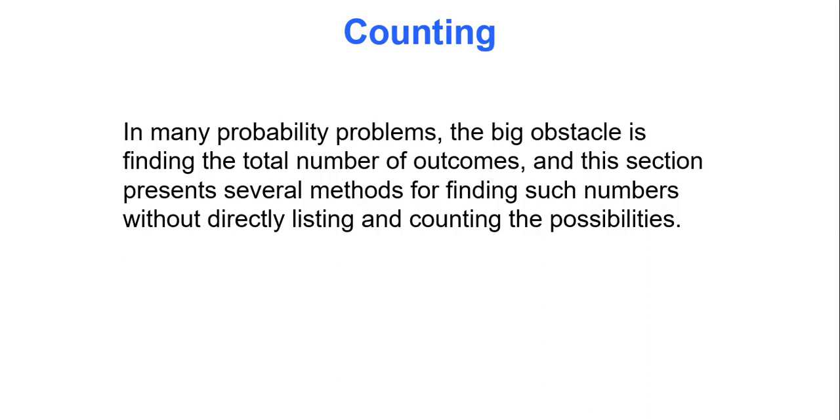So one of the biggest obstacles is, for instance, when someone's having four kids, how do you know that there's 16 outcomes? Because oftentimes you don't want to have to go in and list all the outcomes to figure out how many are there.